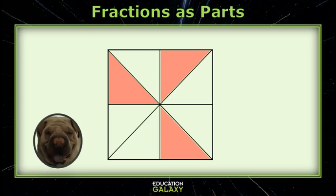Okay, let's look at this square. What part is shaded pink? The square is cut into eight equal parts, so each part would be one-eighth. That's my unit fraction. I notice that there are three parts shaded pink, so it would be one-eighth plus one-eighth plus one-eighth, and that equals three-eighths.